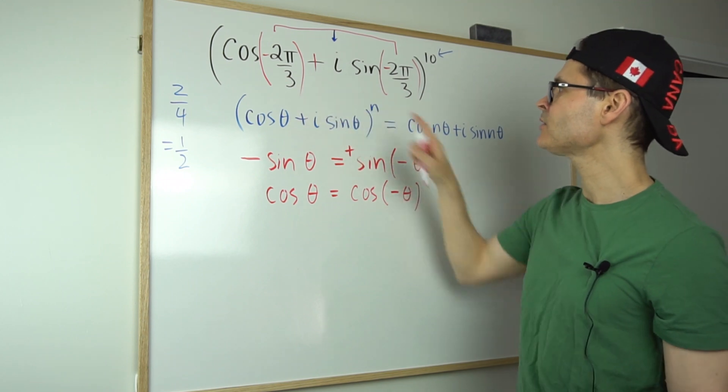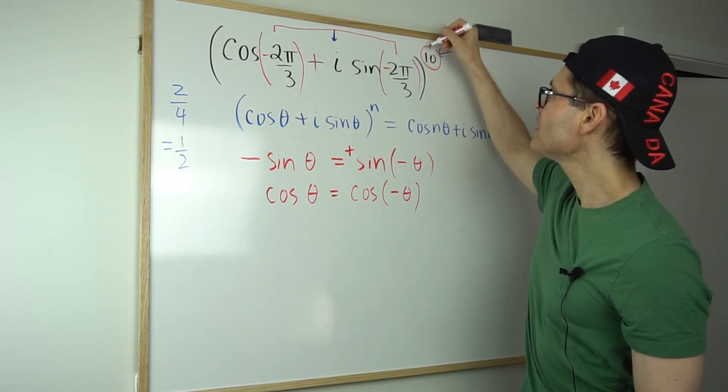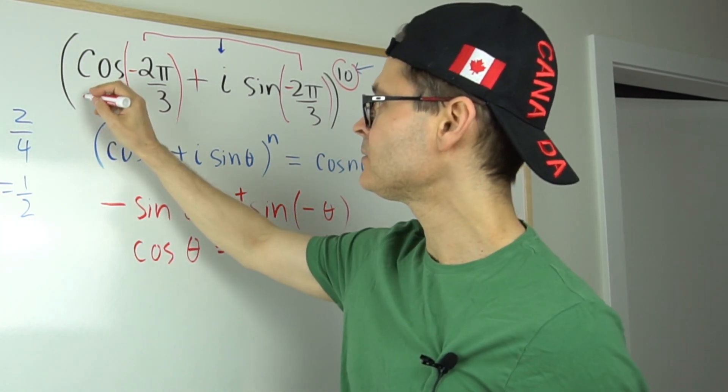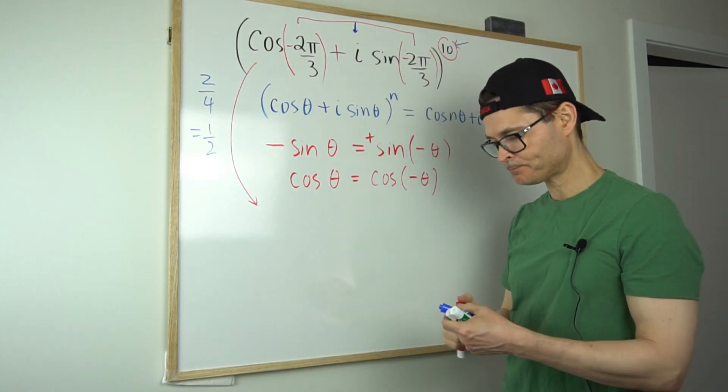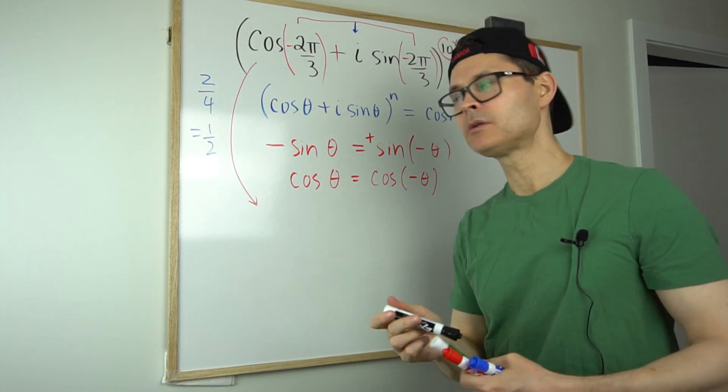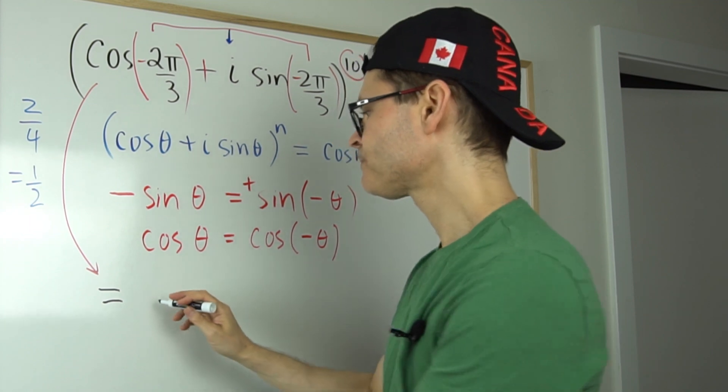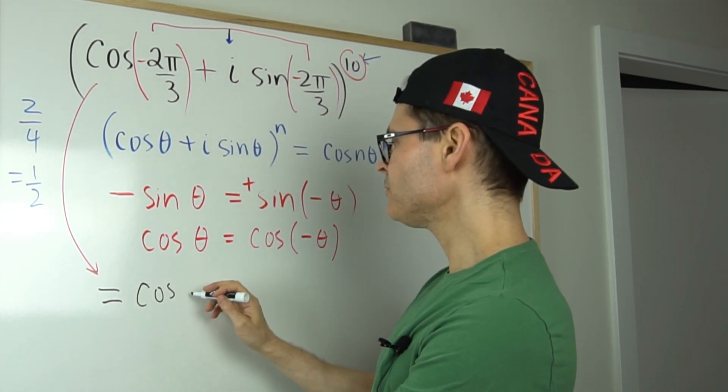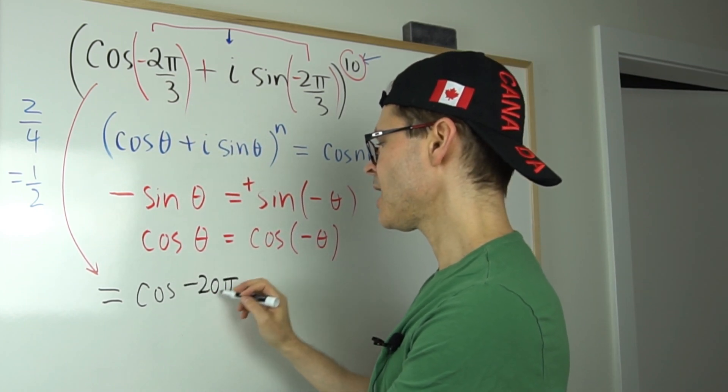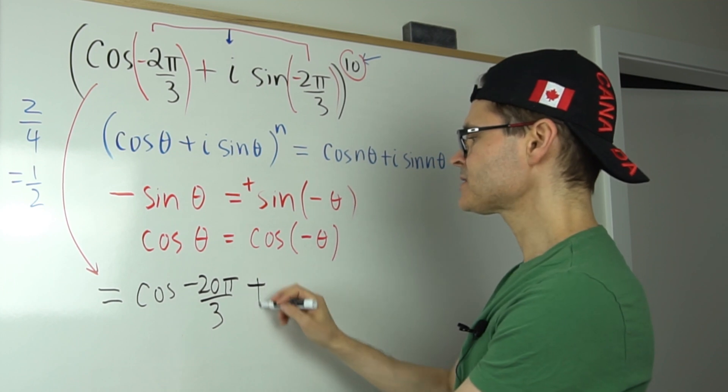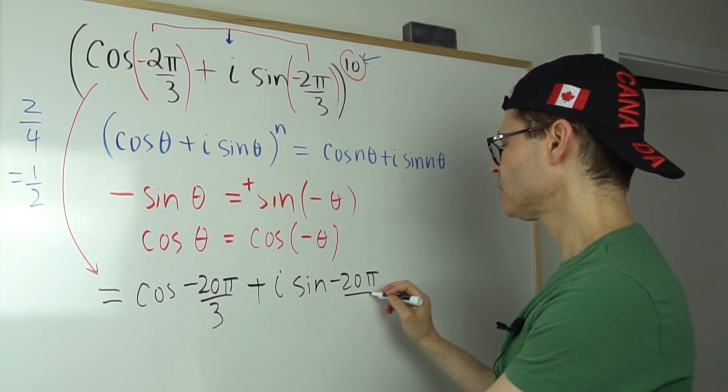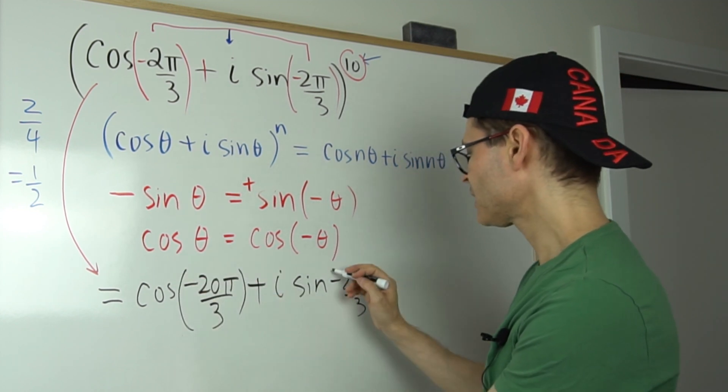Meaning that I can now take this power and apply it as a stretch on theta. So now I could write my original statement here. I'll write it in black. That's going to be equal to the cosine. That's not what I want. So the cosine equals the cosine of 10 times negative 2, negative 20π over 3 plus i sine negative 20π over 3. I'll just put brackets around that just because it looks a little busy.